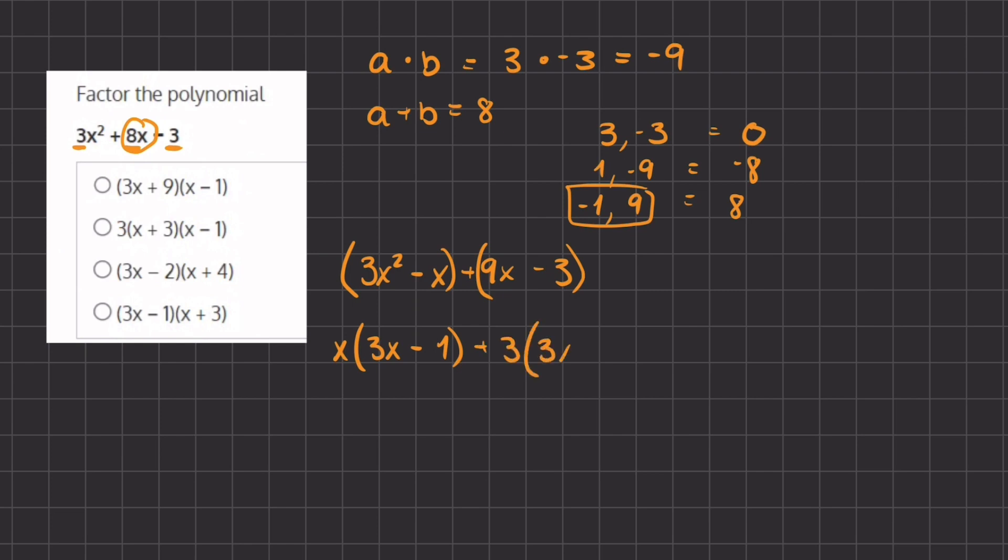Now as you can tell, these two terms in the parentheses are the same, and we are going to factor those out also as a common factor, and what we're left with is x + 3.